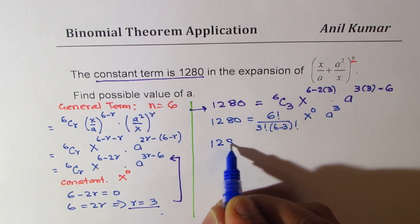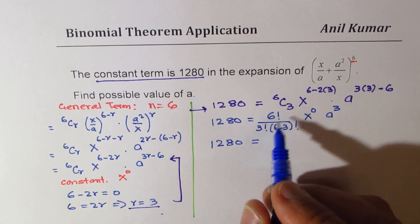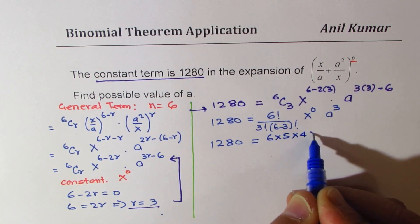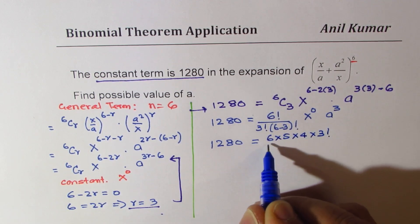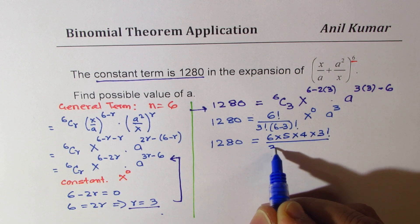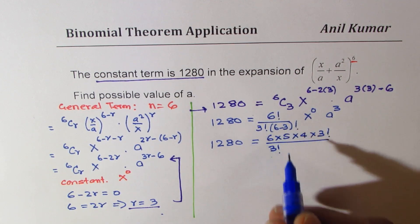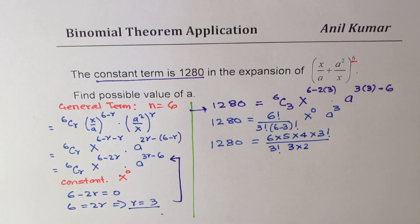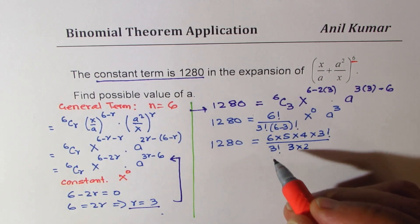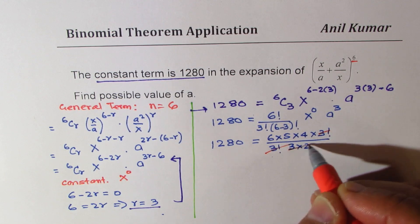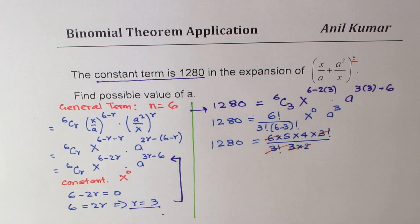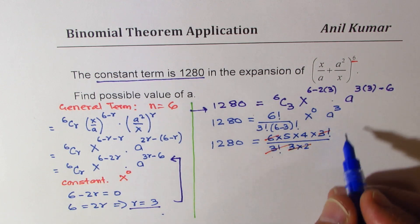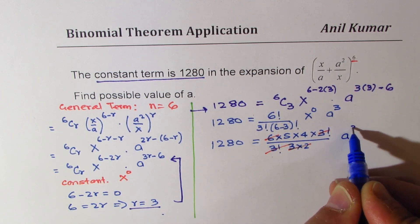So we get 1280 equals, so this could be written as 6×5×4×3! over 3!. This is 3×2×1. So in this expansion, this cancels, 3×2 is 6, we are left with 20. A to the power, x^0 is 1, so we are left with a^3, a cube.